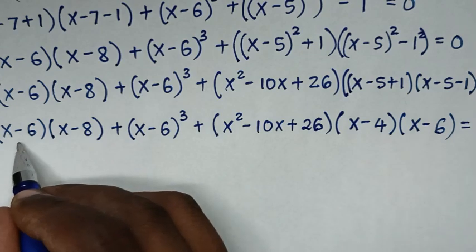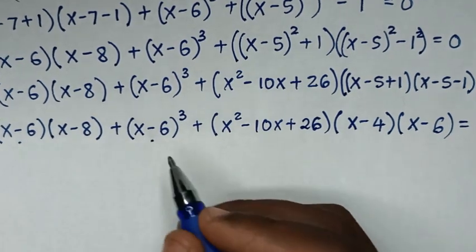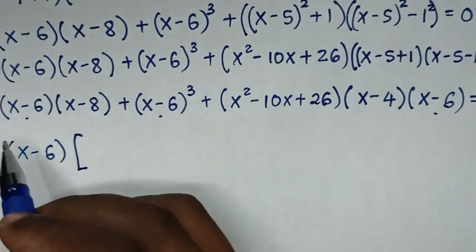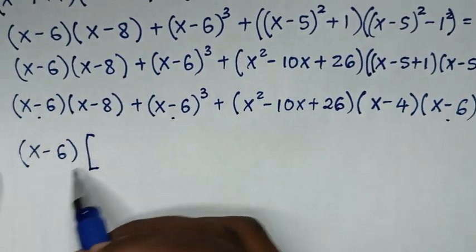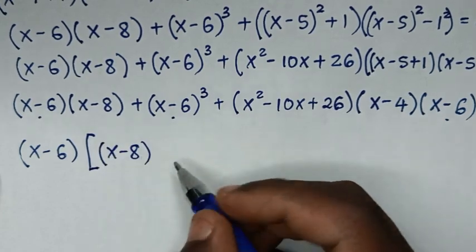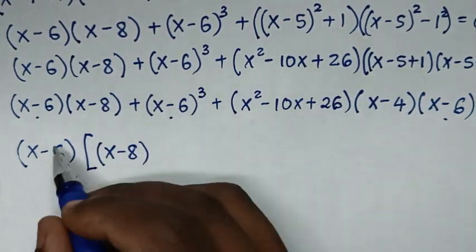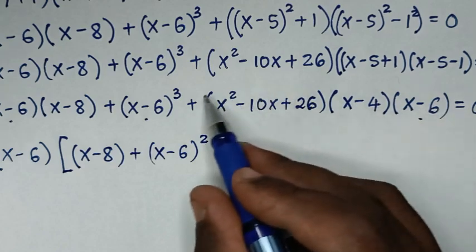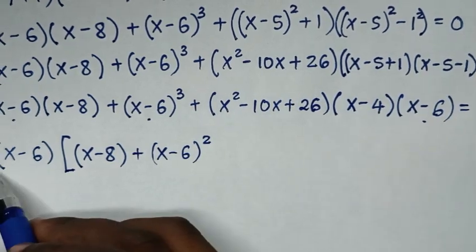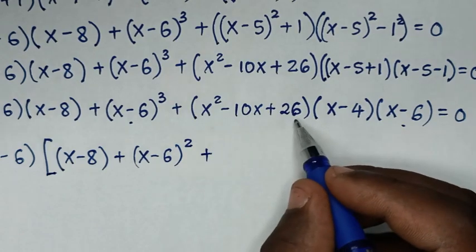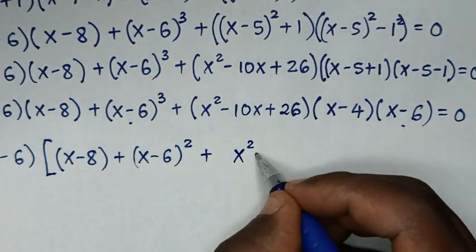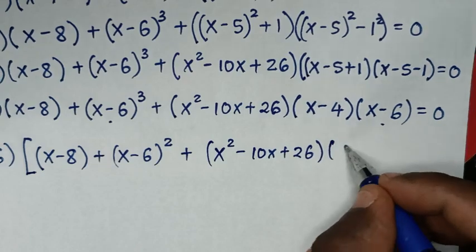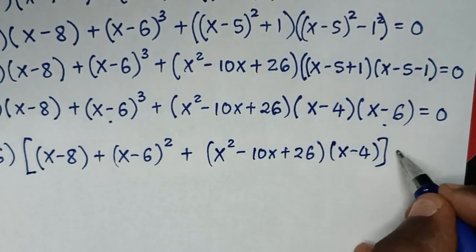From here, we can see that (x minus 6) is a common factor — appearing here and here. So we factor out (x minus 6). Dividing each term by (x minus 6): the first term gives (x minus 8), the second term gives (x minus 6) squared, and the third term gives (x squared minus 10x plus 26) times (x minus 4), equals 0.